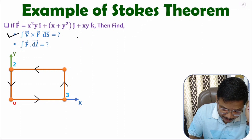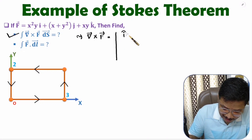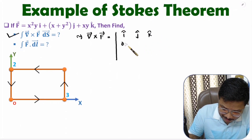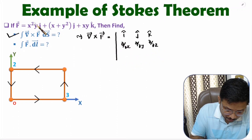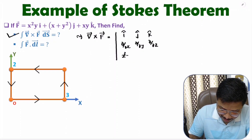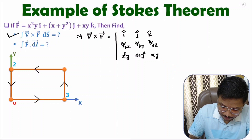First of all, we need to identify curl of function, that is del cross F. One should know how to identify del cross F. Here we have the determinant with i, j, k in the first row; del/dx, del/dy, del/dz in the second row; and the i-coordinate x²y, j-coordinate x+y², and k-coordinate xy in the third row.